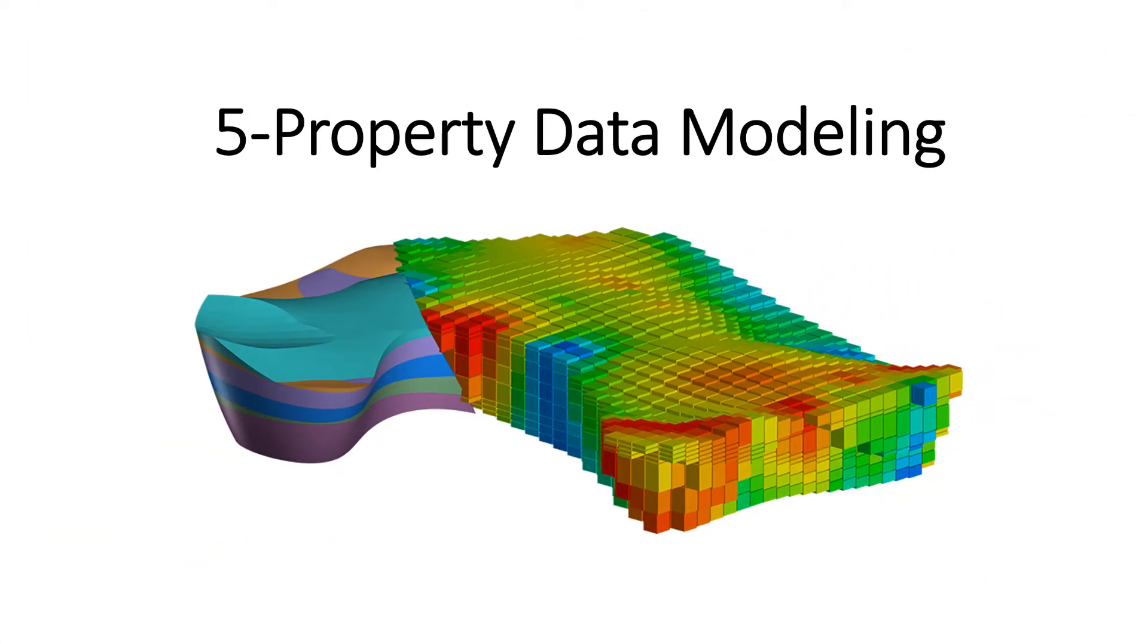Now, simply we need to input property data such as porosity, permeability, into our model. It can be done by simple assignment of these properties to the grid blocks, or more sophisticated methods based on geostatistics can be used. Property data modeling must be done with collaboration of reservoir engineers and geoscientists.